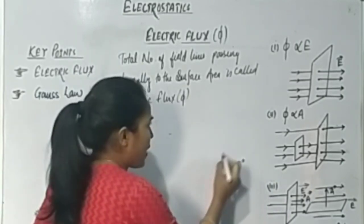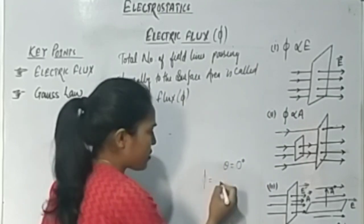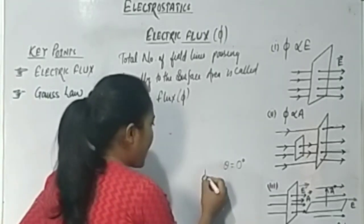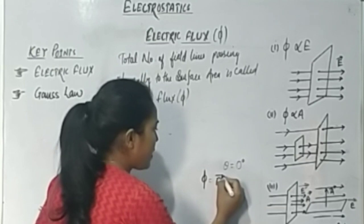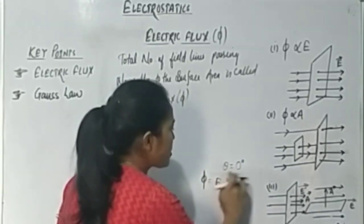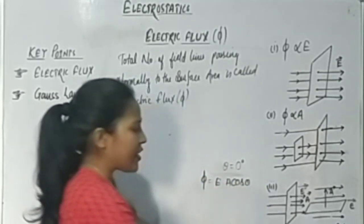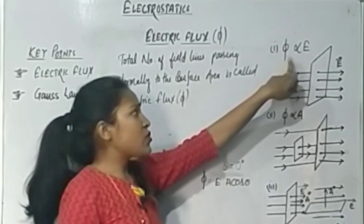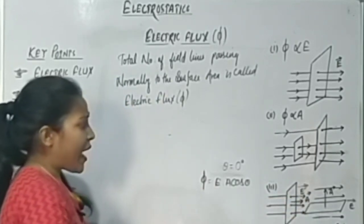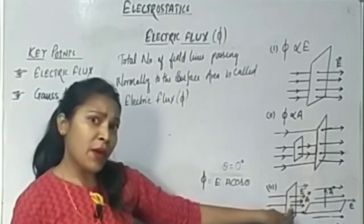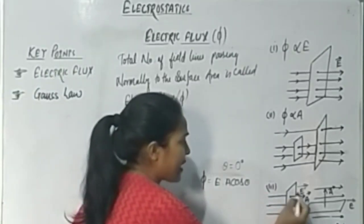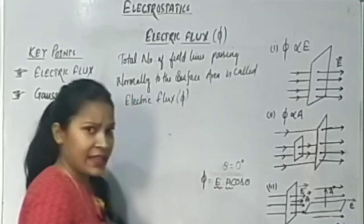Combining all three factors — electric field, area, and the angle — we get the relation: Φ = E · A = EA cos θ. This is the formula for electric flux, which depends on electric field E, area A, and the angle θ between E and A.